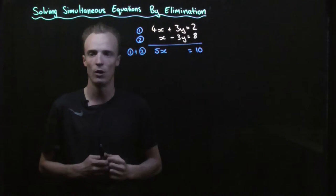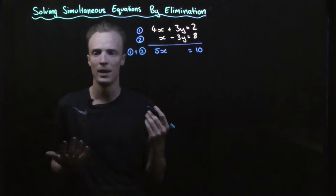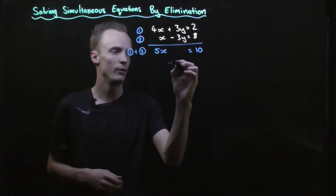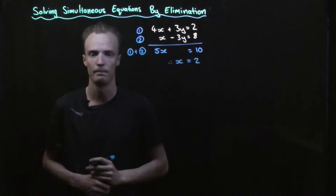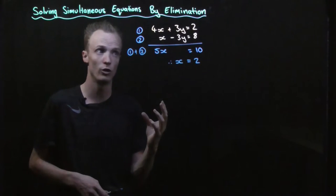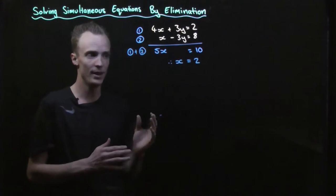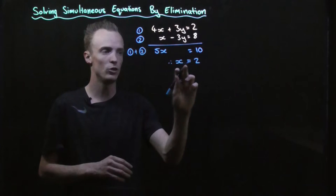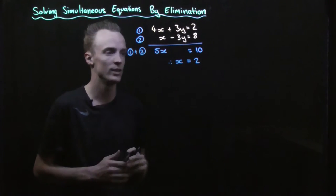We've been successful in eliminating the y value. So now we can solve for x. We've got 5x equals 10, so if we divide both sides by 5 we find that the x value must equal 2. But remember we're trying to find the solution of both the x value and the y value.